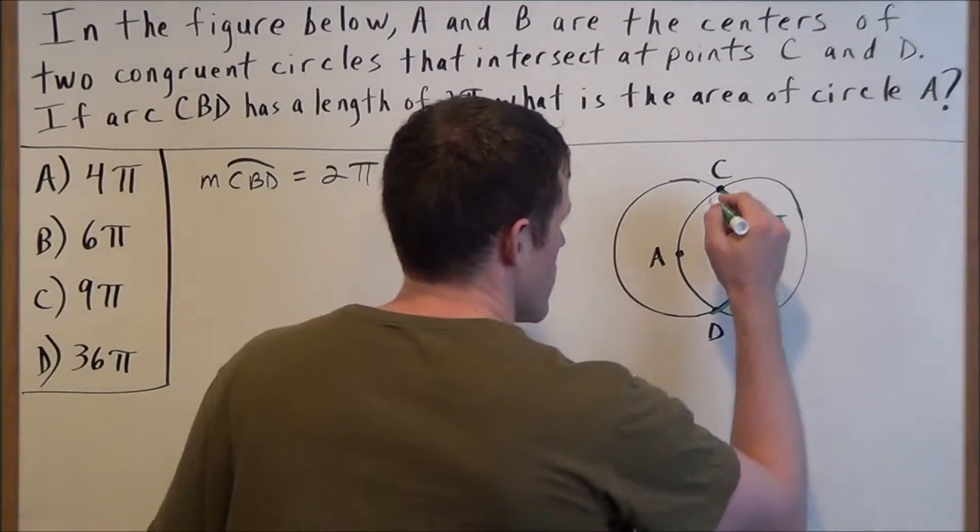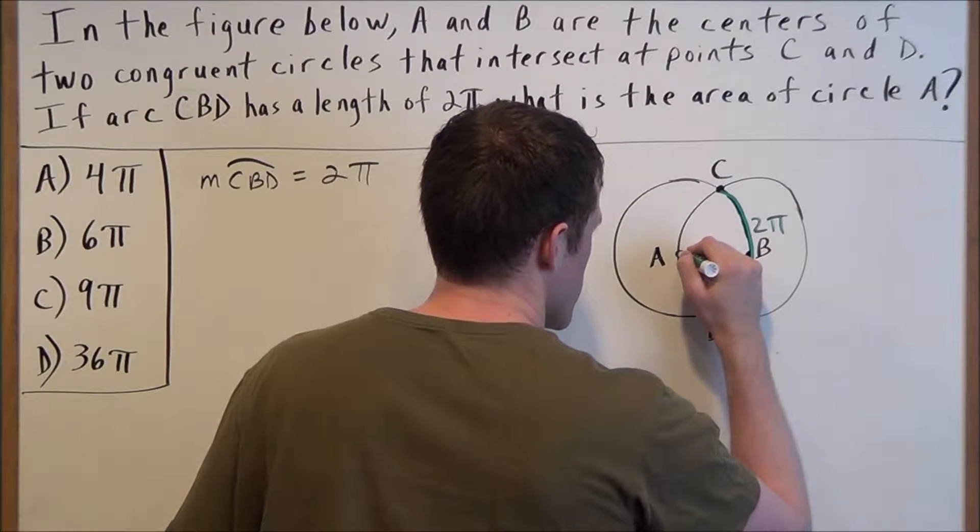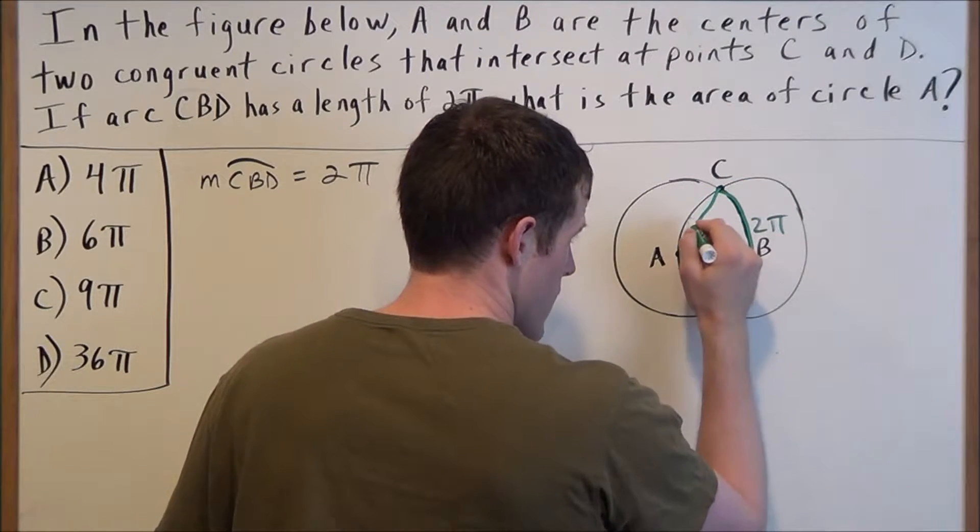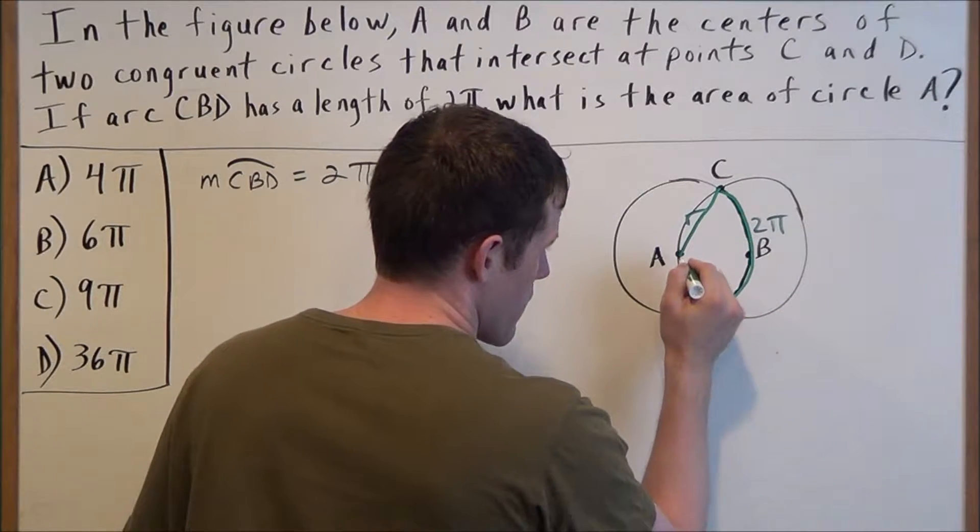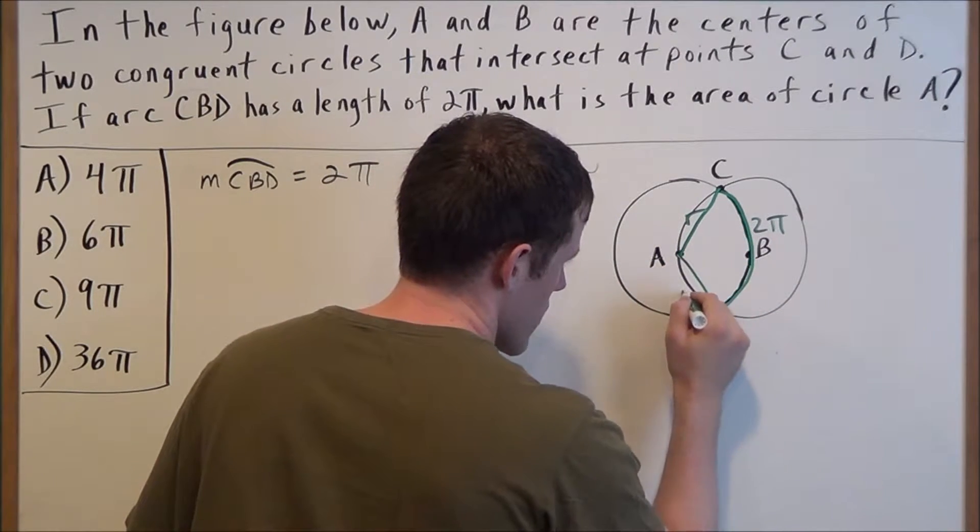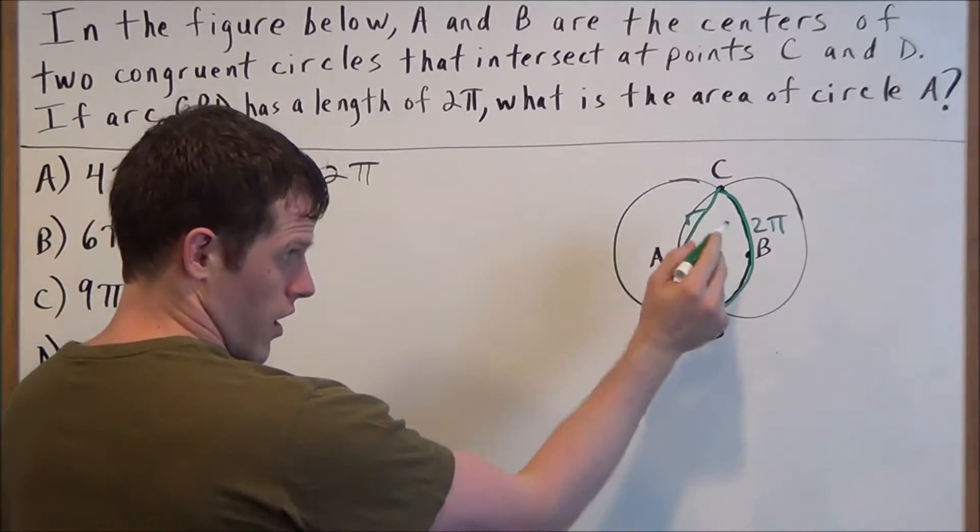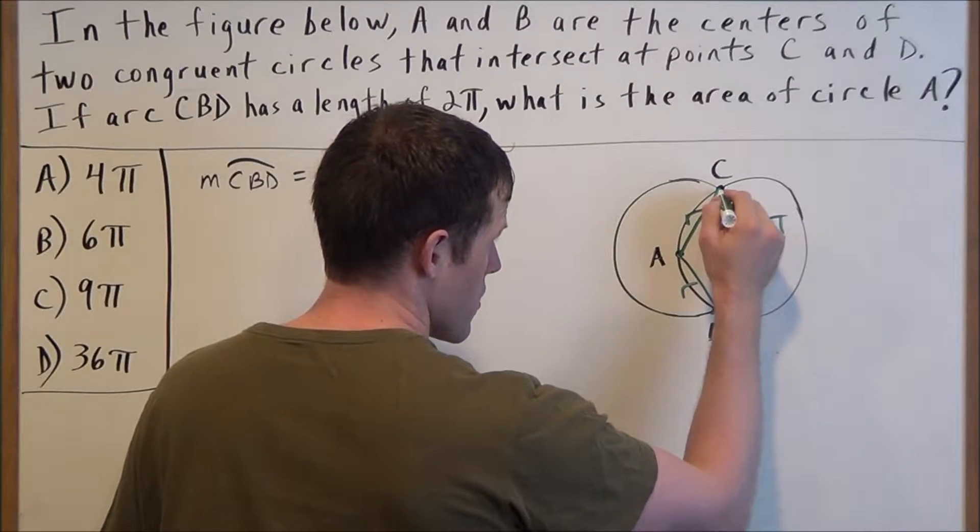So if we draw in multiple radii here, we go from A to C, that is going to be length r. Then from A to D is length r. But then from the center of circle B to point C is also going to be r.